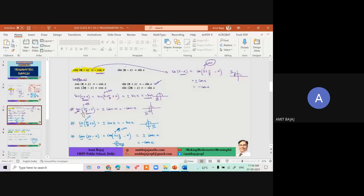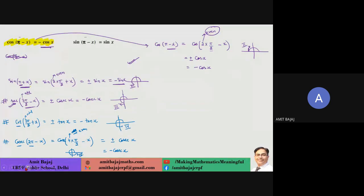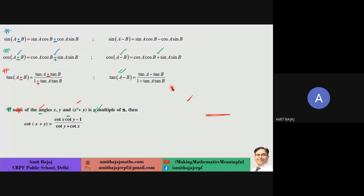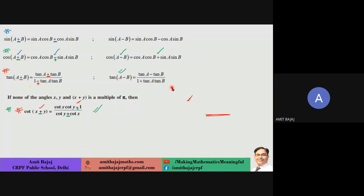We had already covered concepts like cos(π − x) = −cos x. The reason: π − x takes us to the second quadrant, and in the second quadrant cos is negative — that's why the minus sign appears. This is the even/odd concept. Then we revisited these basic fundamental formulas — they should be memorized.